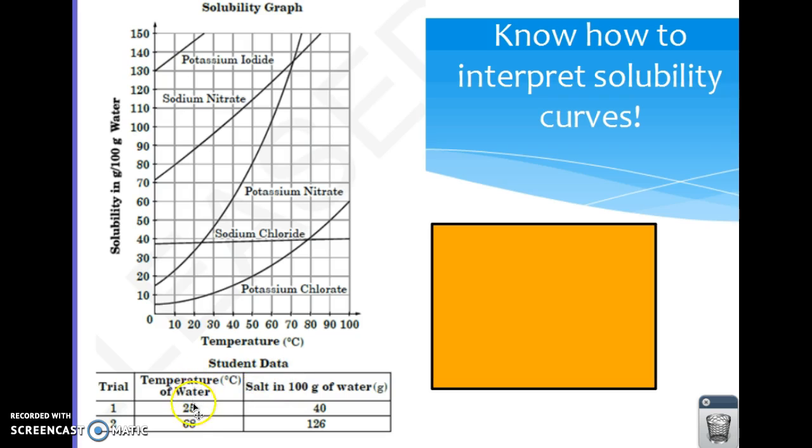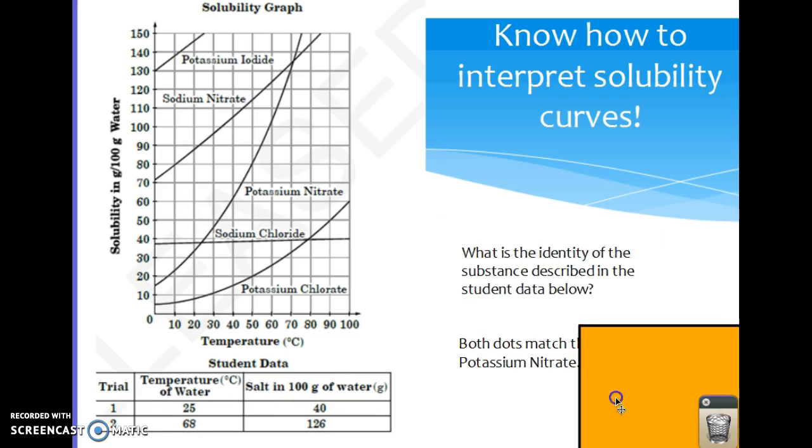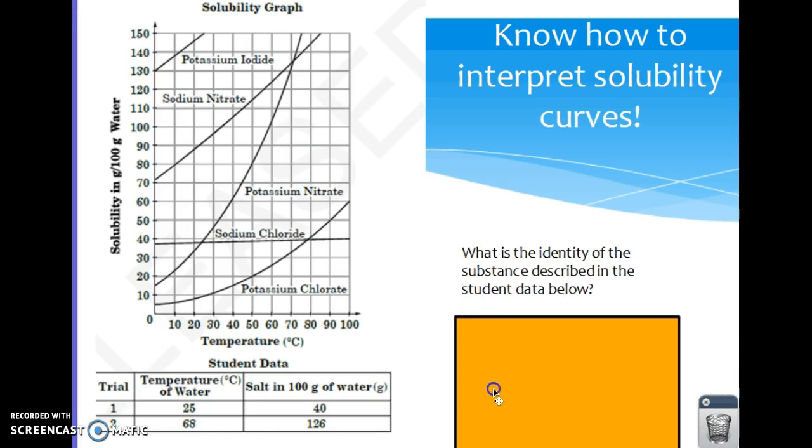This has given you some data for trial one and trial two, the different temperatures of water, and how much of it actually dissolved. So the question is asking you, what is the identity of the substance in the data? So all you have to do is figure out where 25 and 68 degrees are.